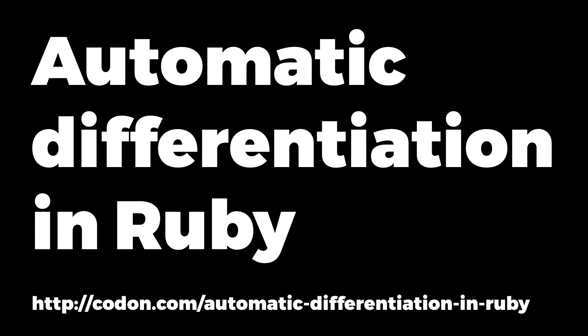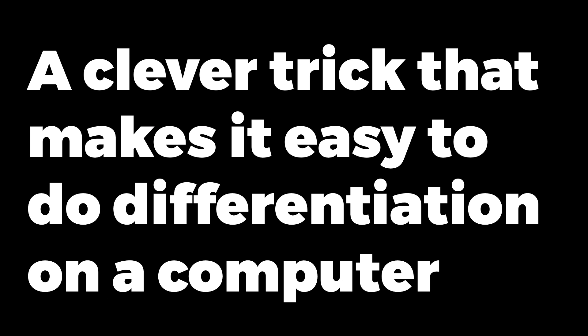Hi. I'm going to briefly talk about what automatic differentiation is and how to do it in Ruby. Automatic differentiation is a clever trick that makes it easy to do differentiation on a computer. It's a beautiful fusion of maths and computer programming and I want to tell you about it so you can enjoy how satisfying it is.